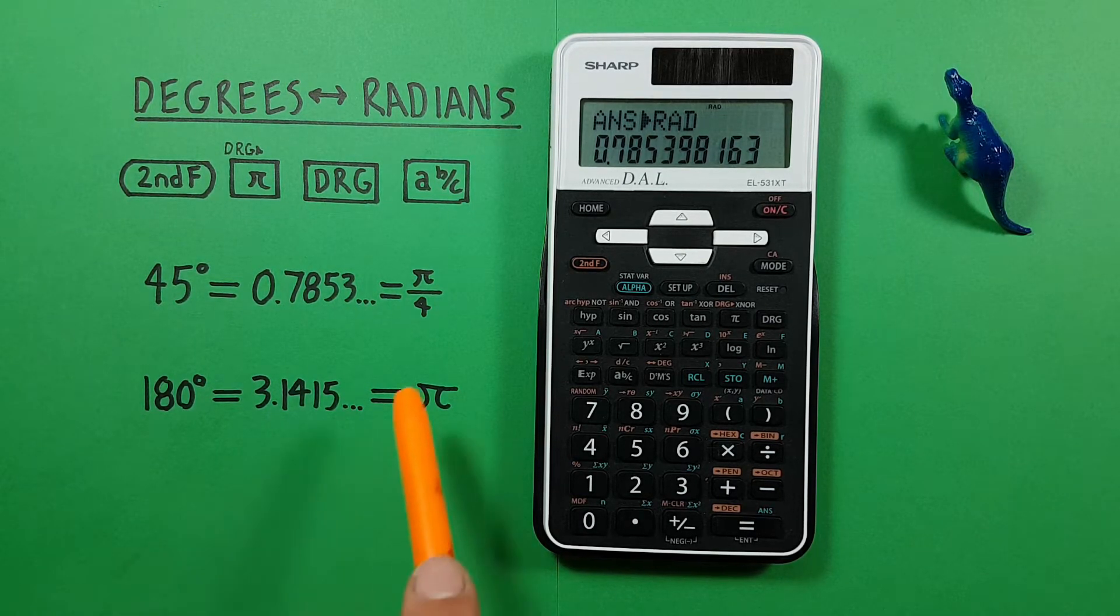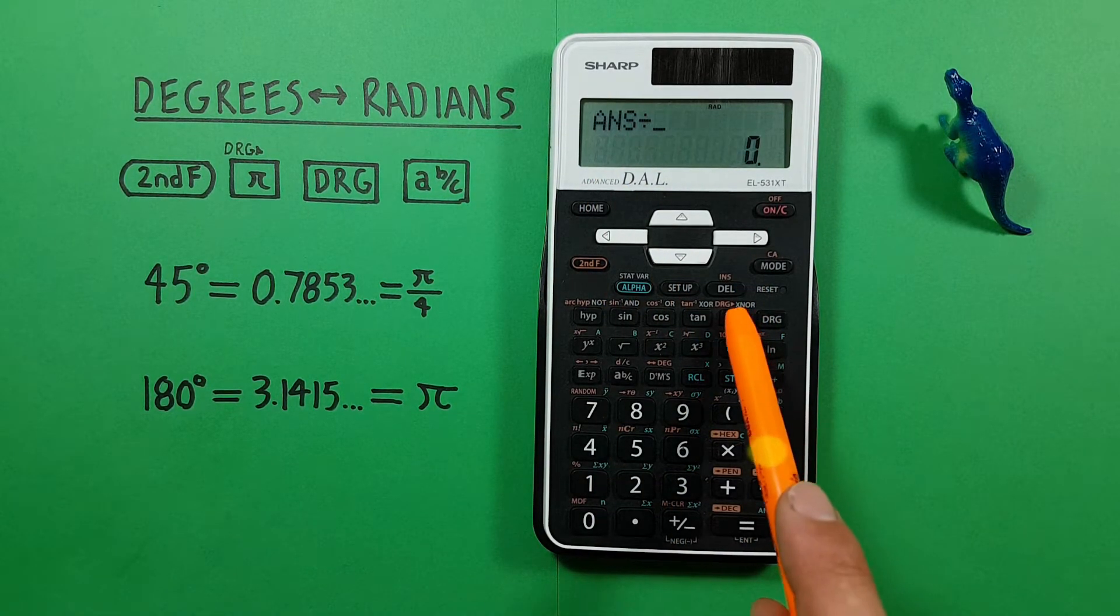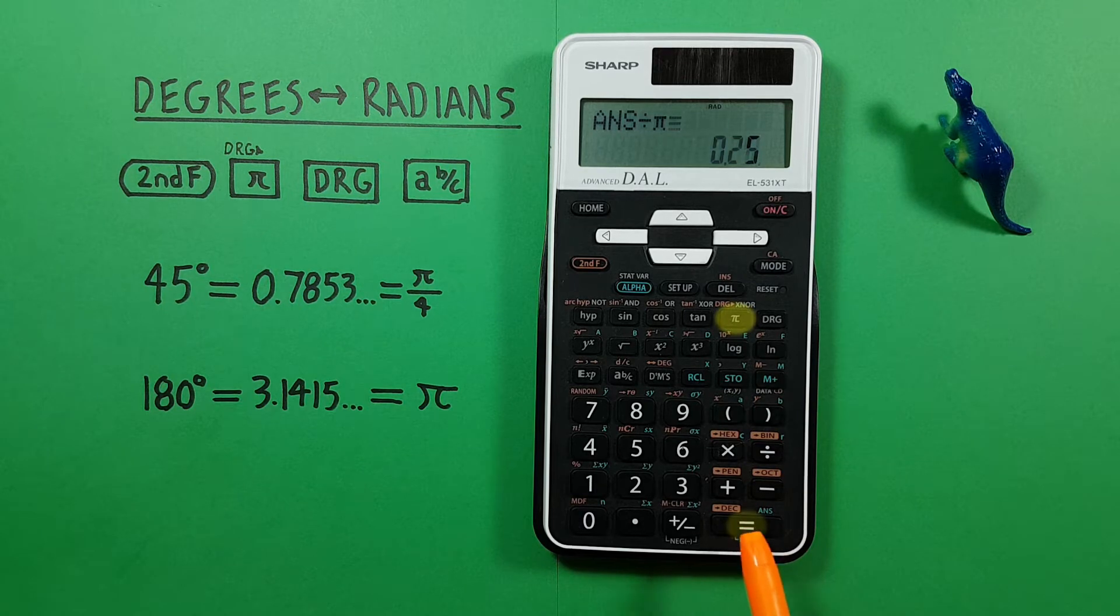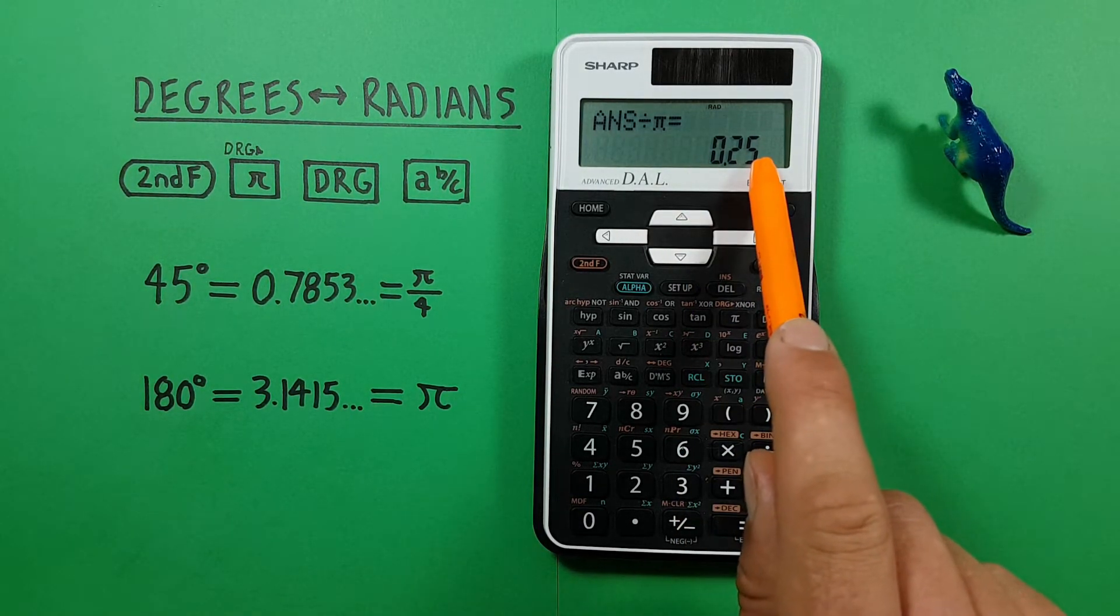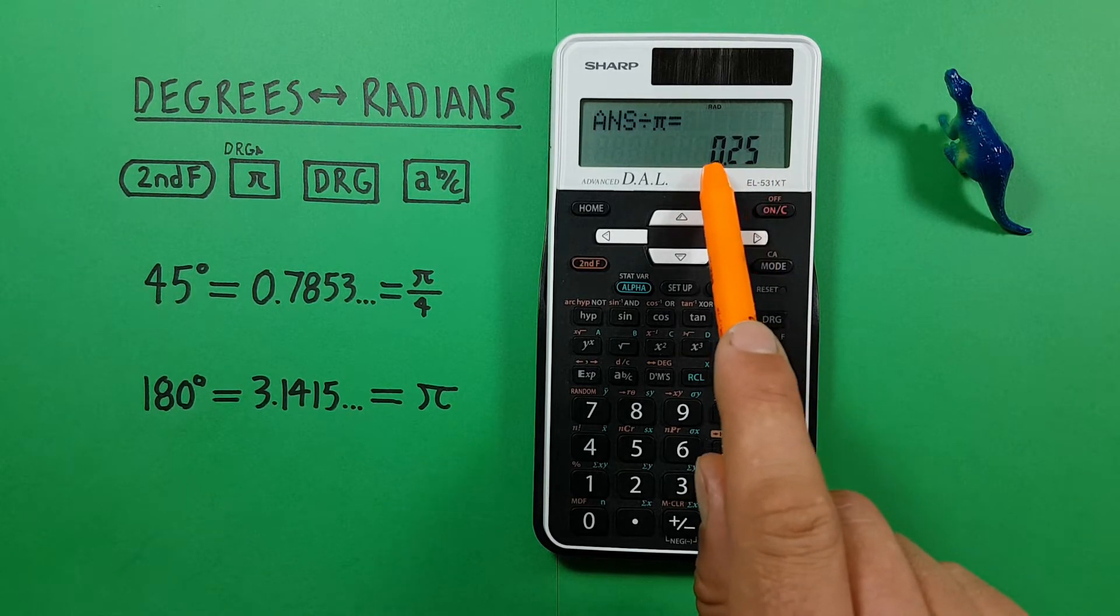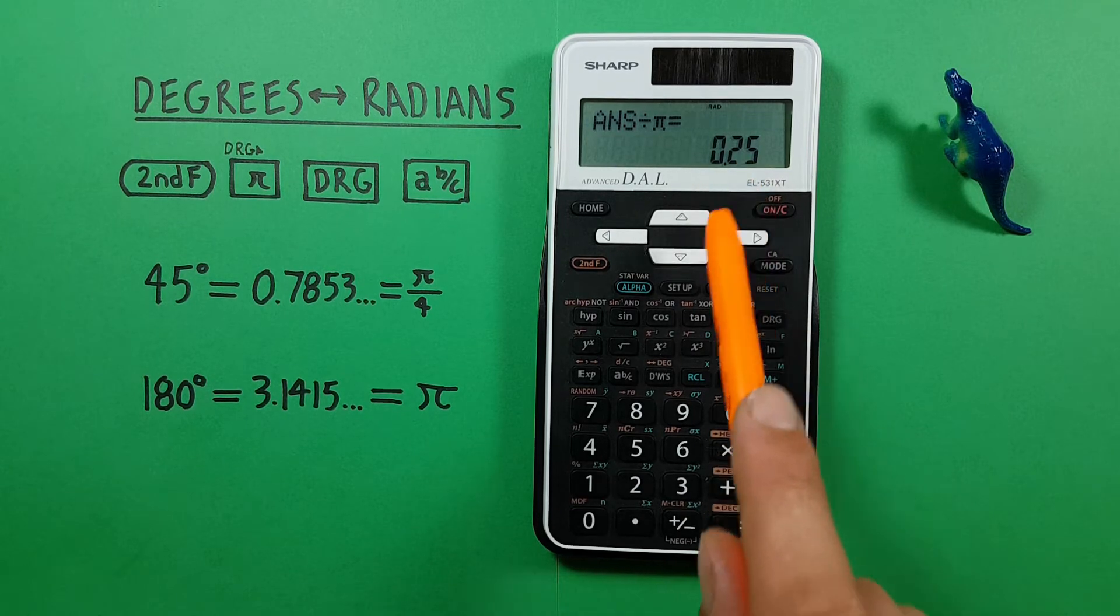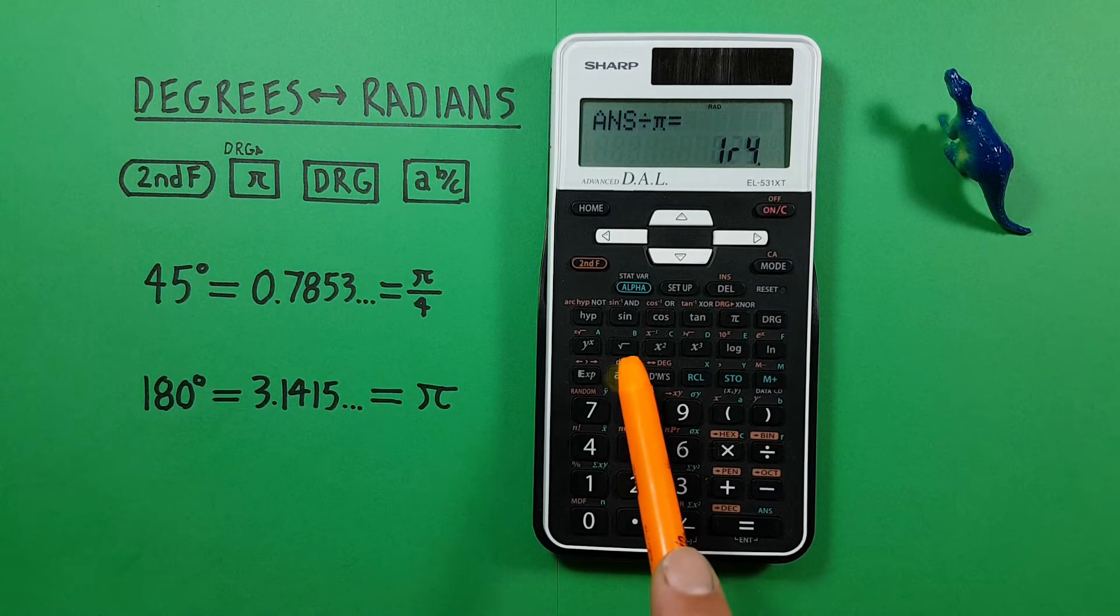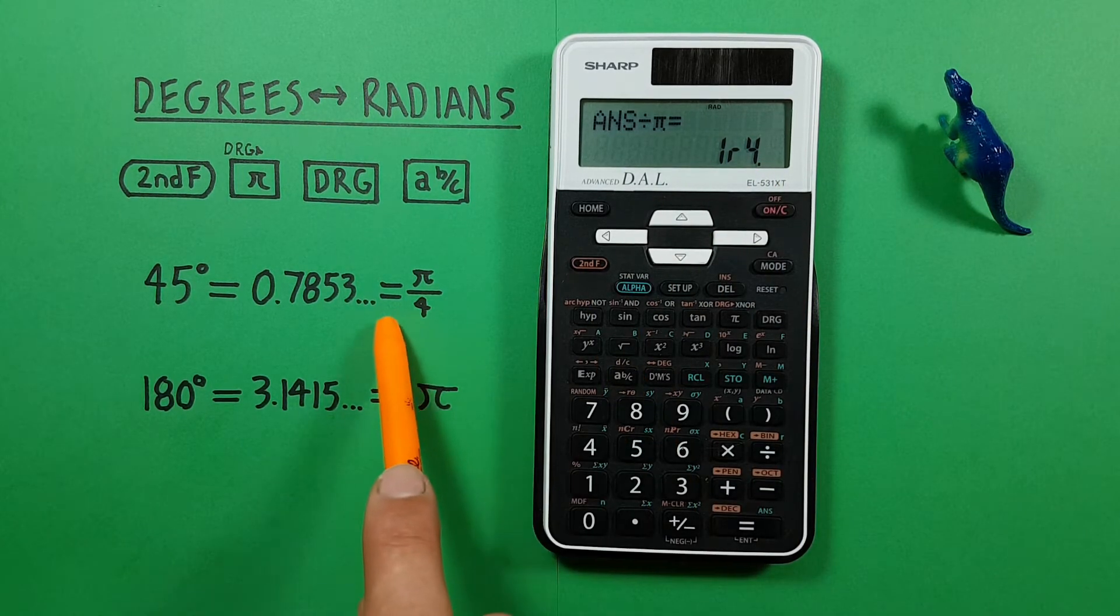But what if we want to get it in this format here? Well, there's a few steps that we have to go through. To do that, first, what we have to do is divide our answer by pi. So we go divided by pi, press equals, and we get 0.25, which we should recognize as the same as 1 over 4. But if we want to get it in that format, we can press the fraction key here. And we get a result of 1 over 4, which in this context is pi over 4.